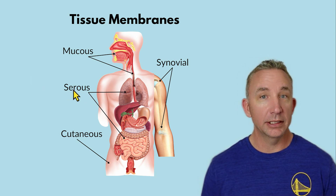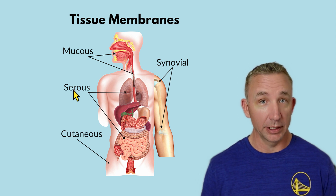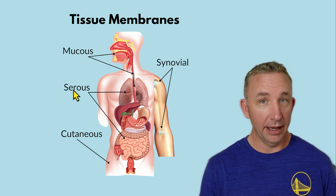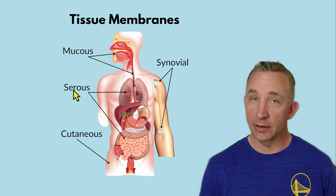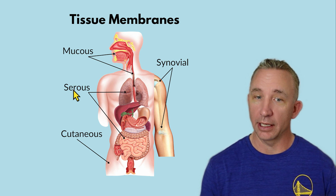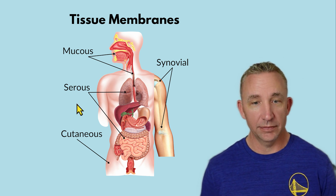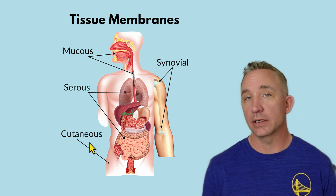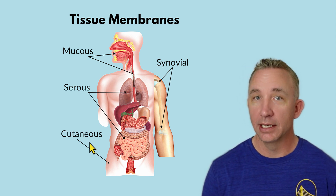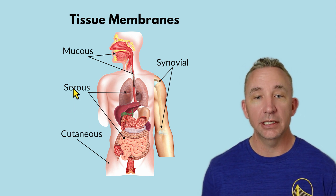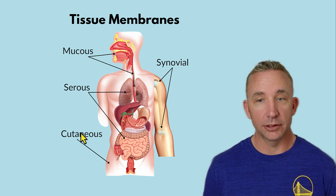Serous membranes — I have a whole other video on serous membranes because we talked about body cavities. What lines our body cavities are serous membranes, and they're called serous because they secrete a fluid. See the next video for that. Cutaneous refers specifically to the skin — it's the covering, the windshield of our body. So these three are epithelial tissue.